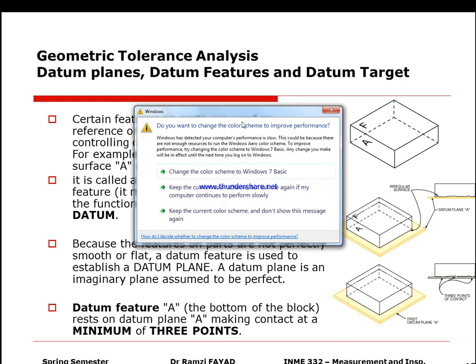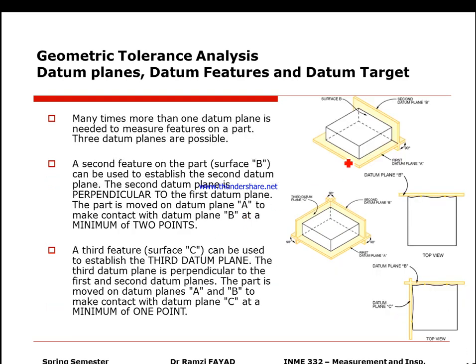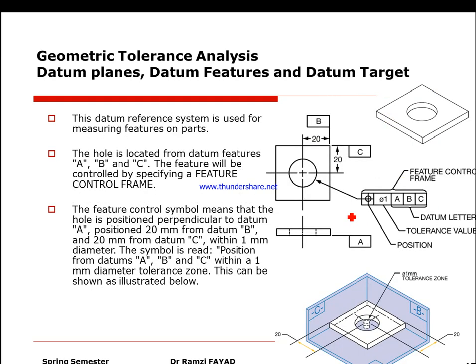We move to geometric tolerance analysis: datum planes, datum features, and datum targets. If you zoom into a surface using a microscope, the surface is not perfectly smooth — it has peaks and valleys. When placing the surface on a datum plane, the primary datum at the bottom requires at least three points of contact. The secondary datum plane requires a minimum of two contact points. In the example, the hole is located from datum features A, B, and C.